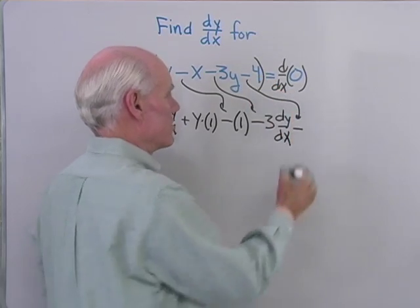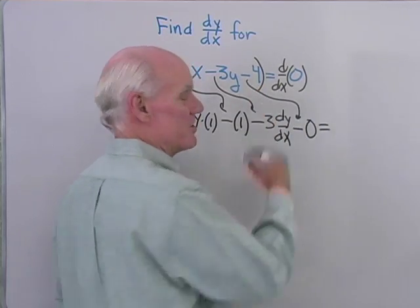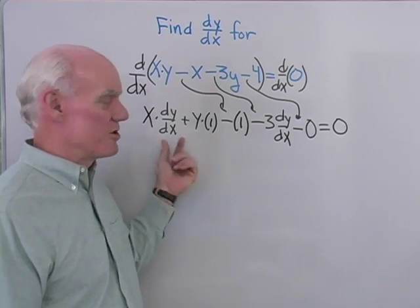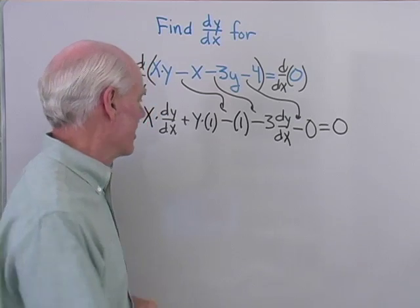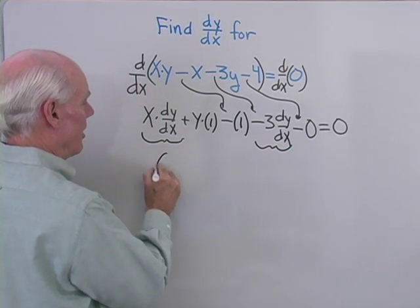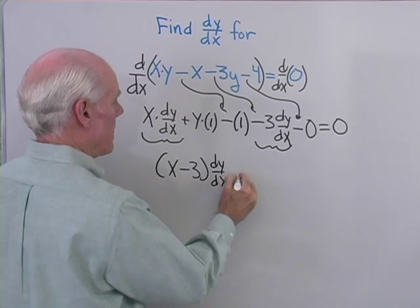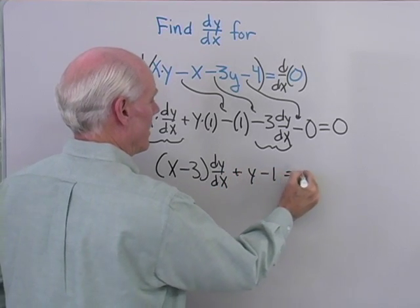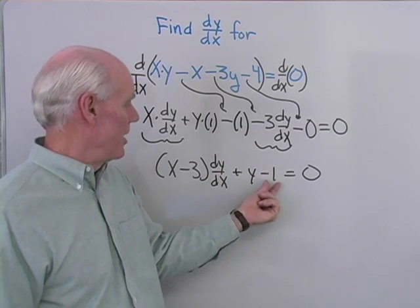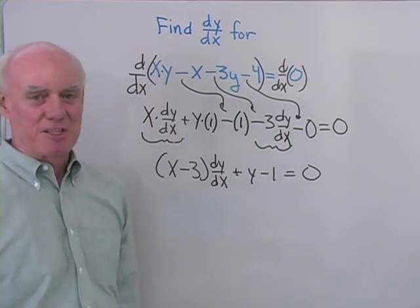Minus the derivative of 4 with respect to x, which is 0. Equals the derivative of 0, which is 0. Now I've got the derivative in two places, so I have to solve this equation for dy/dx. Taking these terms and factoring dy/dx out, I end up with x minus 3 times dy/dx plus y minus 1 equals 0. Here's my plus y, my minus 1, and I've factored dy/dx out of those terms, leaving me with x minus 3.